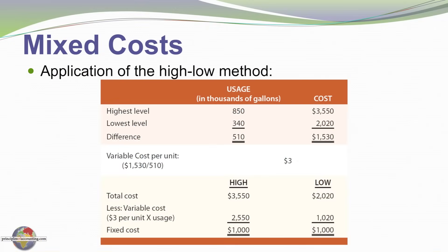So let's see how this would work. Here I've got an example. We've identified our usage. Our highest level was 850,000 gallons and our lowest level was 340,000 gallons, a difference of 510,000 gallons. We compare that to our cost. The highest cost was $3,550. The lowest cost, $2,020, a difference of $1,530. So very simply, we've got a range of 510,000 gallons and a cost range of $1,530.